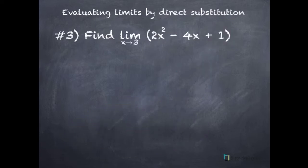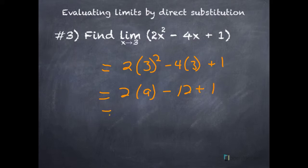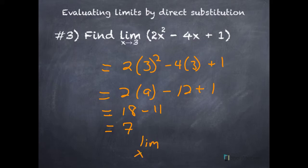Third example. Find this limit by direct substitution. We are going to replace the x's with 3's. When you substitute, you're supposed to use parentheses. 3 squared is 9, 4 times 3 is 12, 2 times 9 is 18. Minus 12 plus 1 is minus 11, so this gives us 7. When you write your answer, write the question and the answer: the limit as x approaches 3 of our function equals 7.